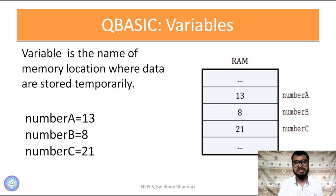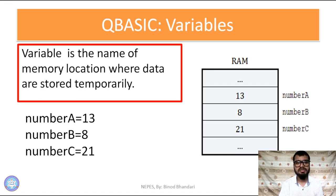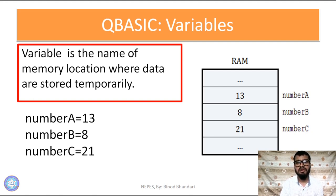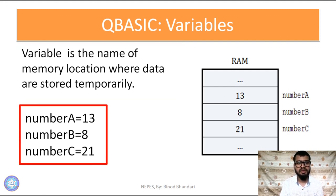QBasic variables are the name of the memory location where data are stored temporarily. If you want to store any data, we can use variables. These variables are defined as the name of memory location — the name of memory of the RAM, that is Random Access Memory.